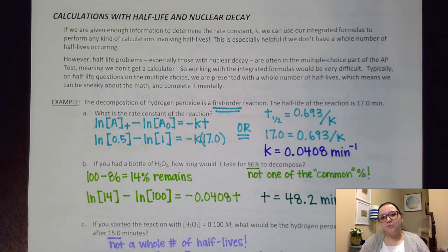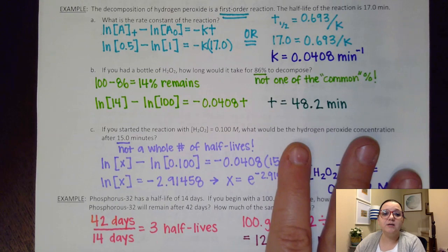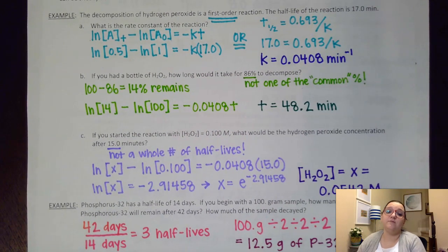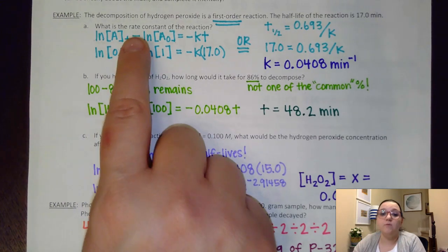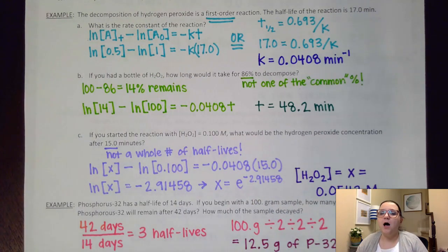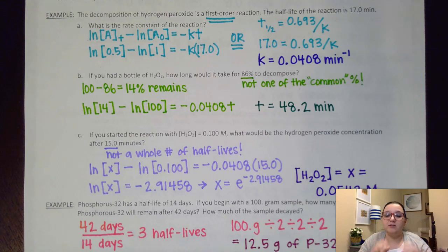Let's first look at a problem that I could use my integrated formula to solve. The decomposition of hydrogen peroxide is a first order reaction, which is really helpful because now we know half-life time is constant. It also tells us here that the half-life of the reaction is 17 minutes. When I see that they're giving me a time and they're asking us to solve a rate constant K,